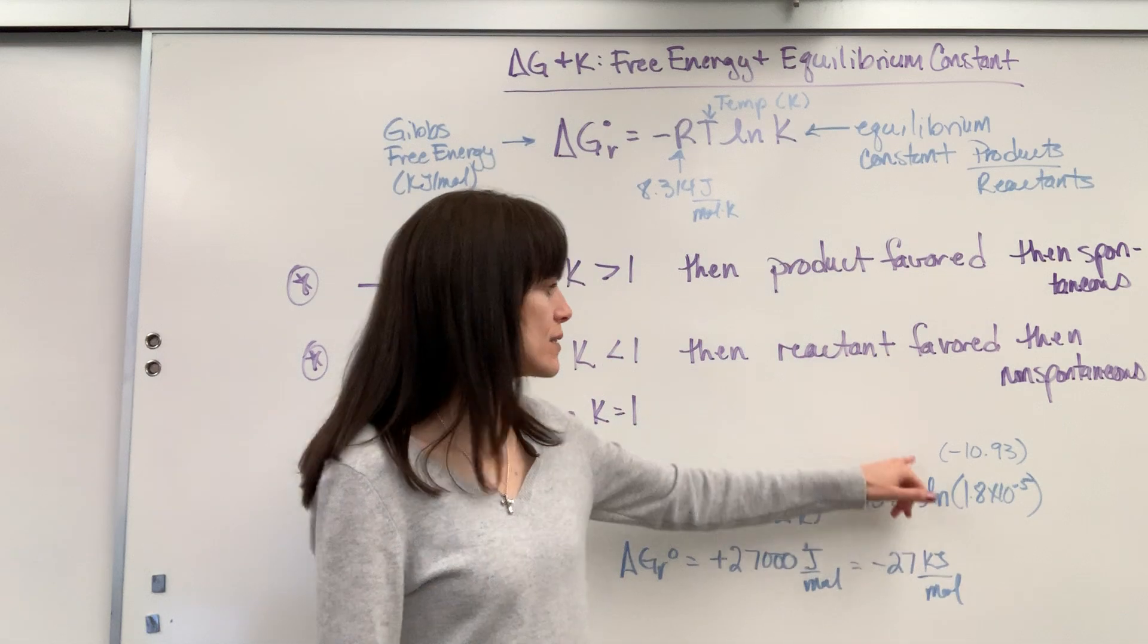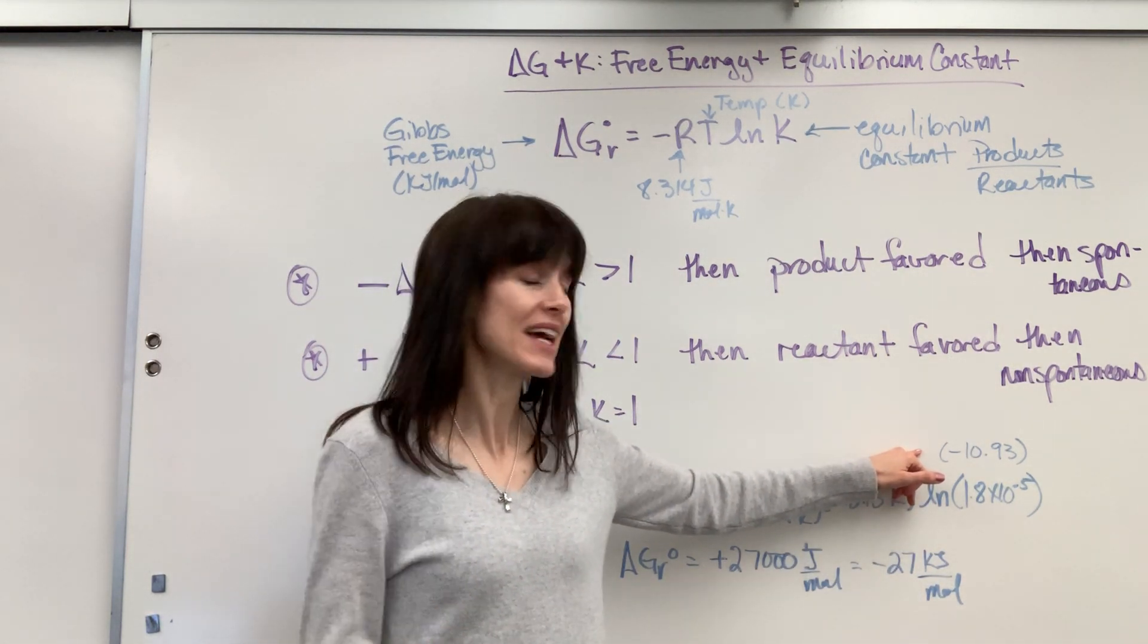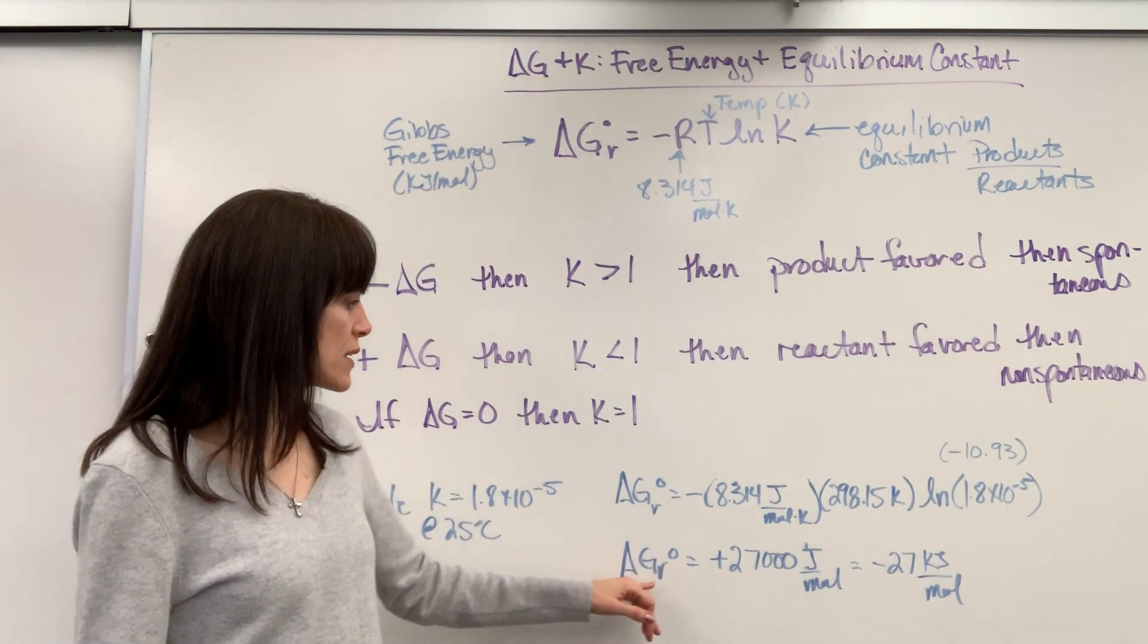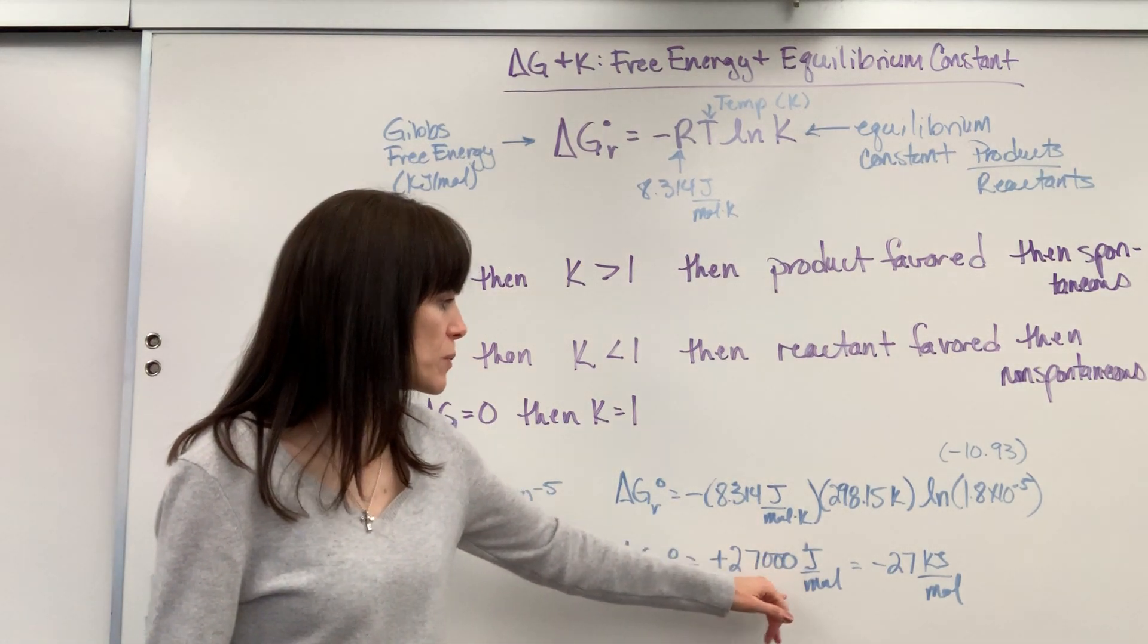Now, when I did that in my calculator, it gave me a negative number. Natural log of anything less than 1 is negative, so negative times negative gives me a positive number. So delta G, our Gibbs free energy, is positive 27,000 joules per mole.